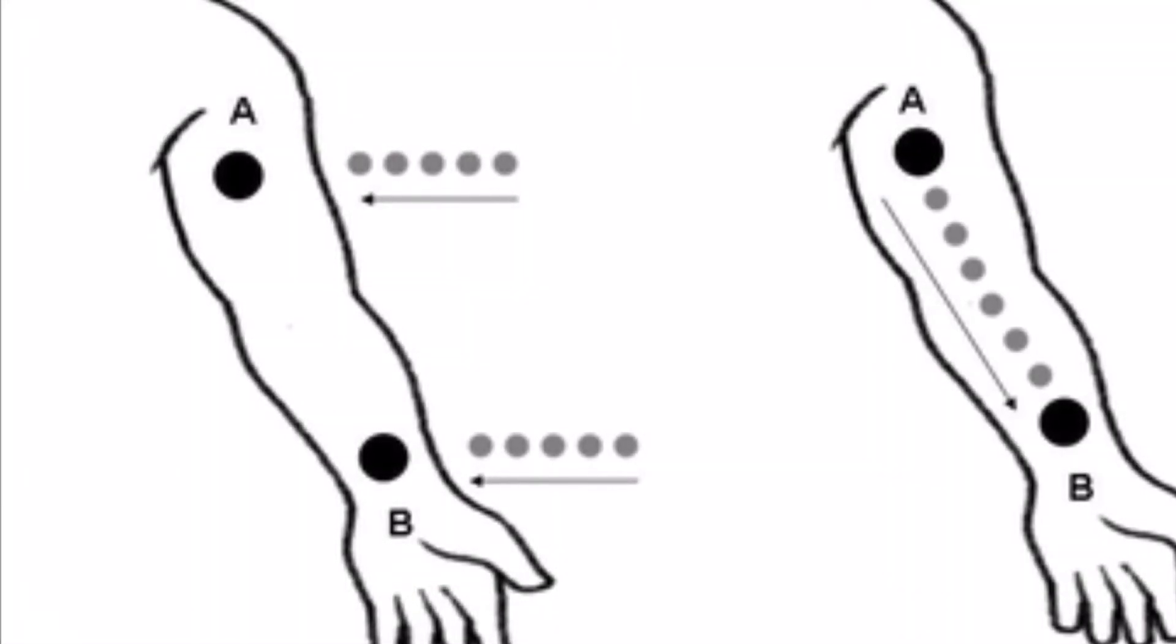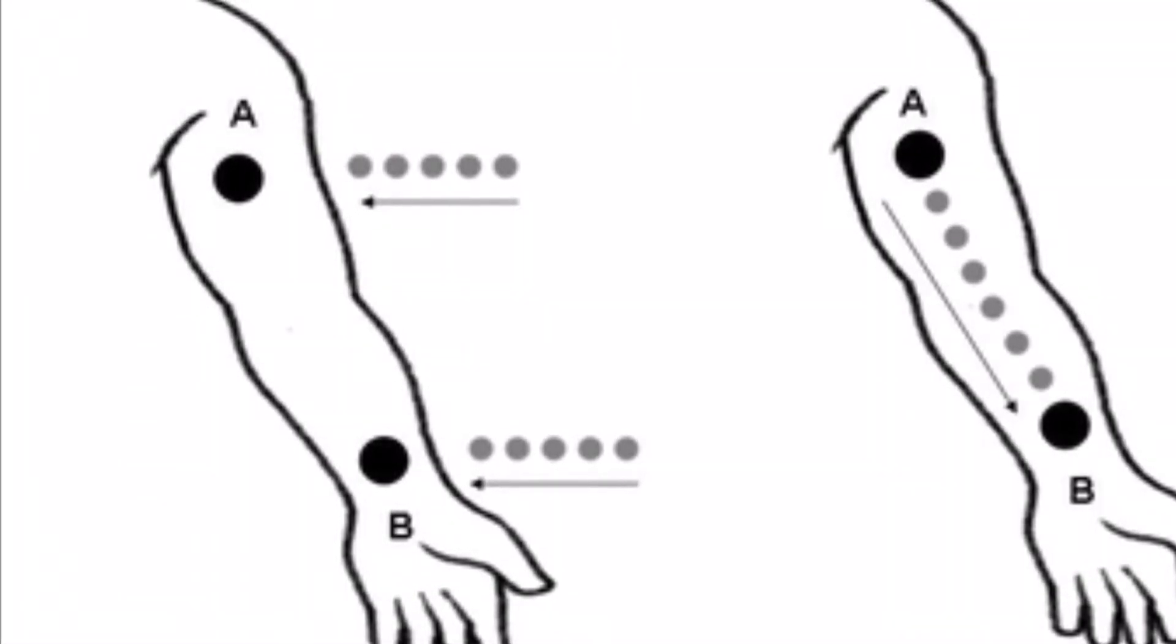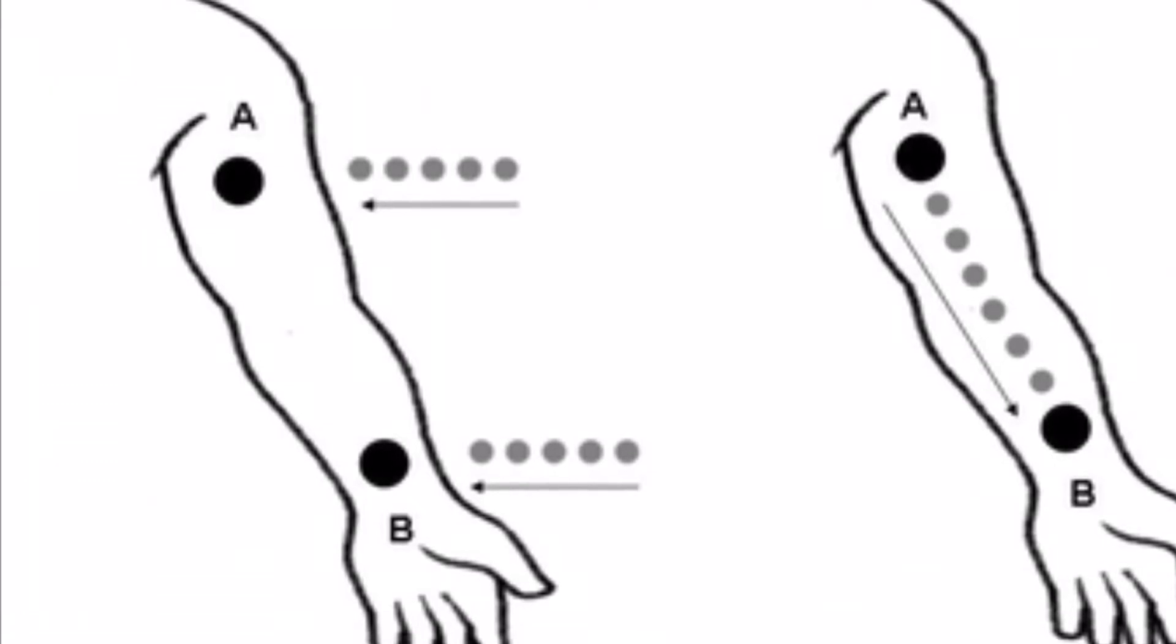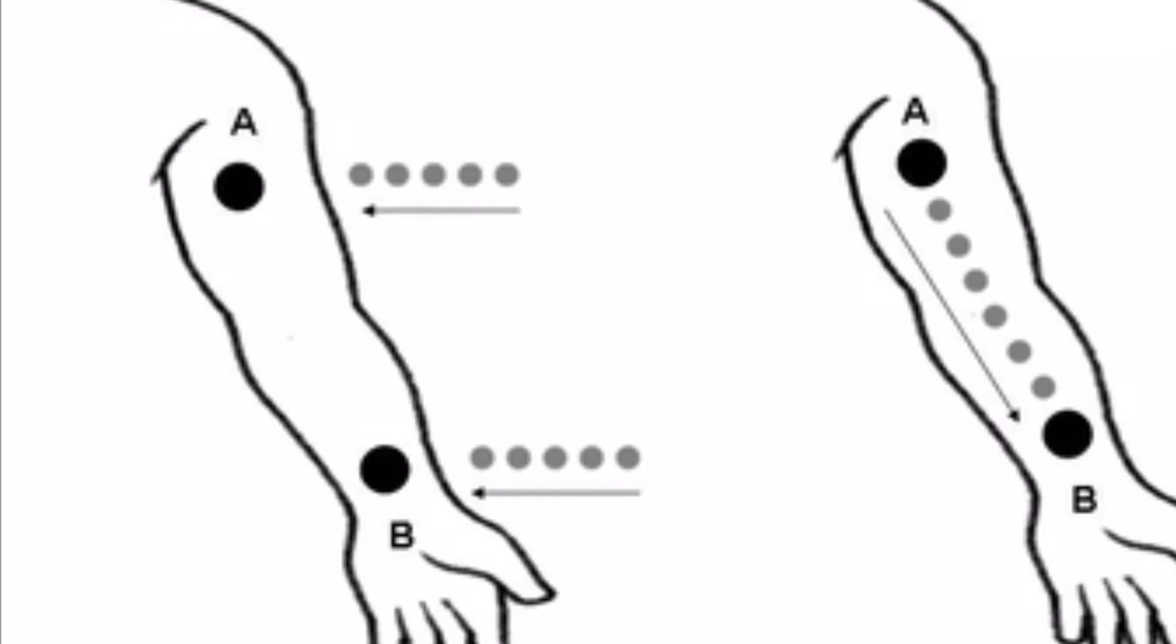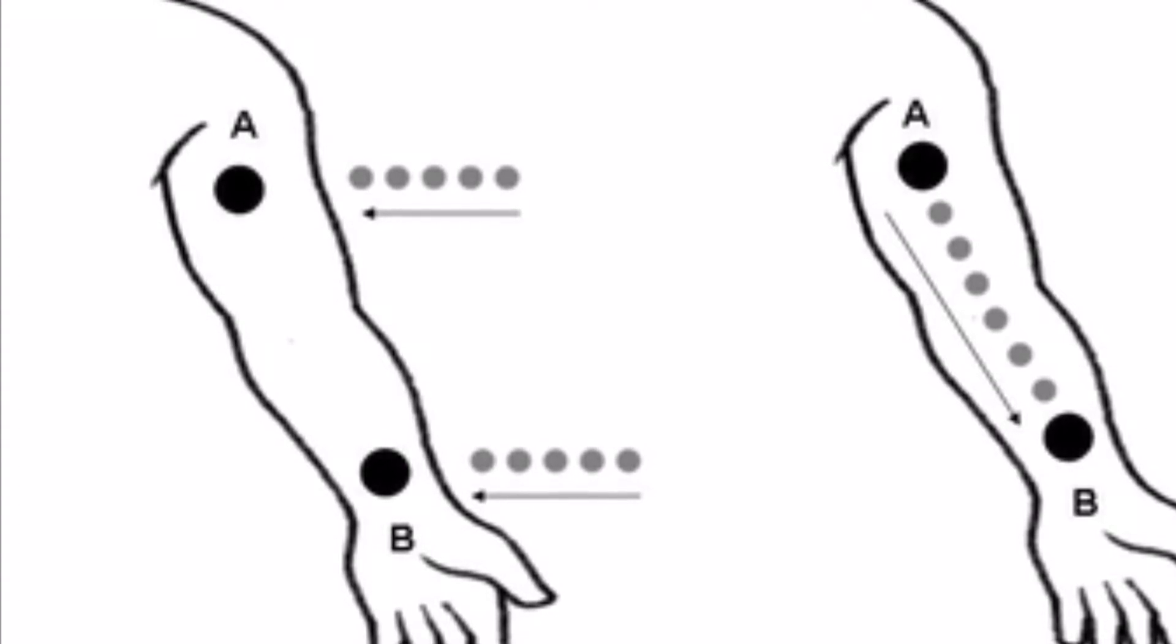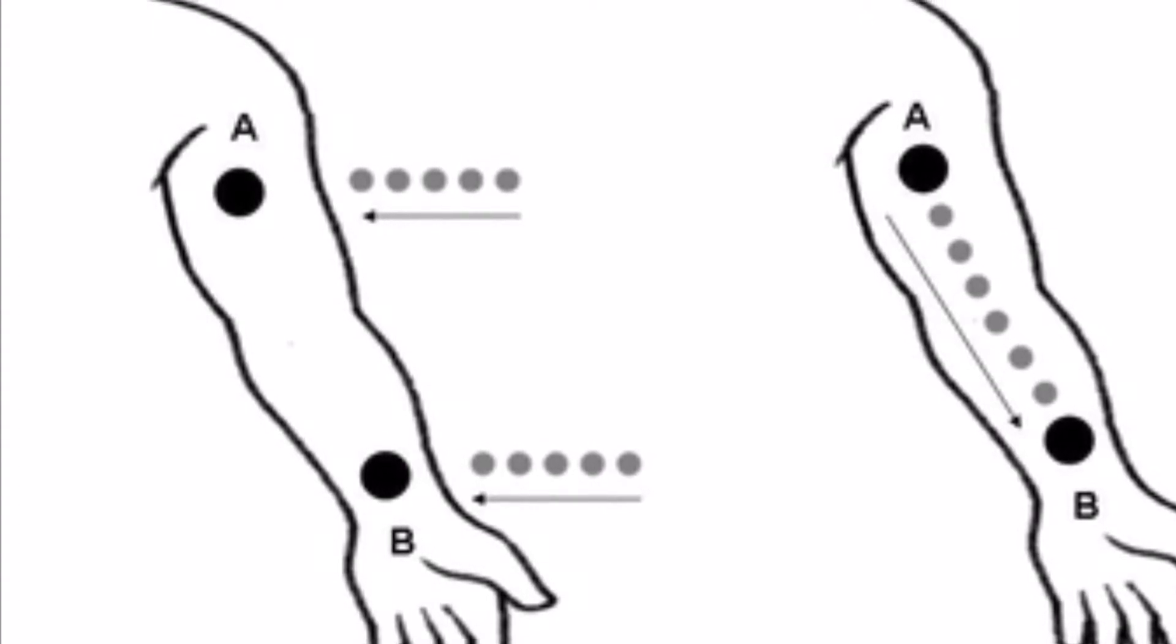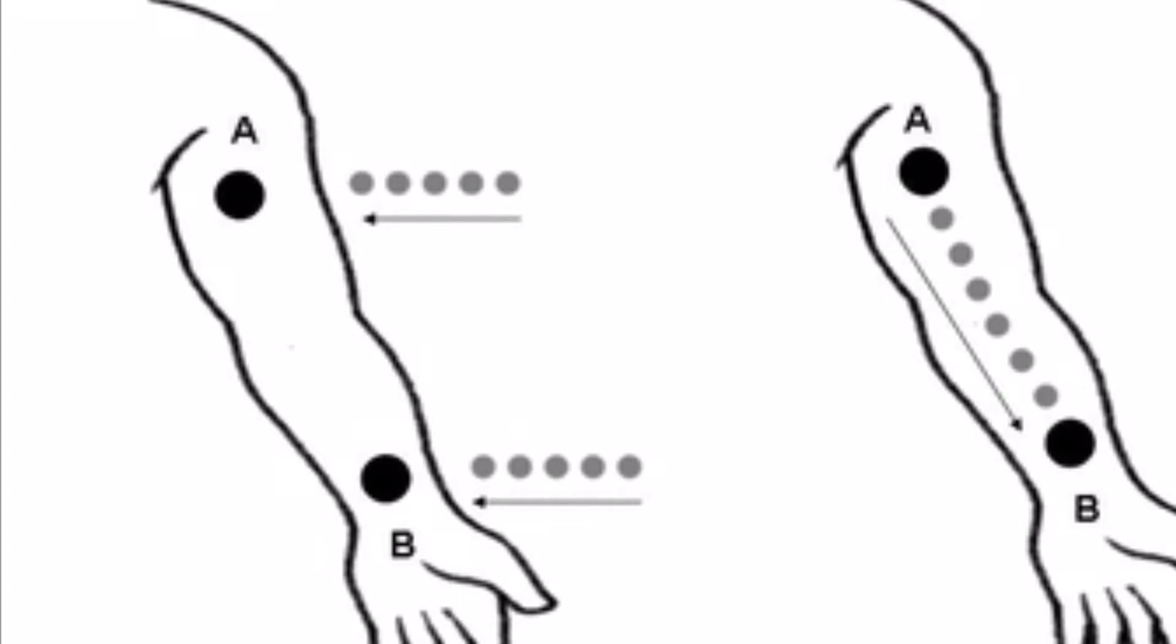The cutaneous rabbit illusion is evoked by delivering a sequence of taps quickly near the wrist and then near the elbow. This creates the illusion of multiple taps progressively up the forearm although there was no physical stimulus between the two points.